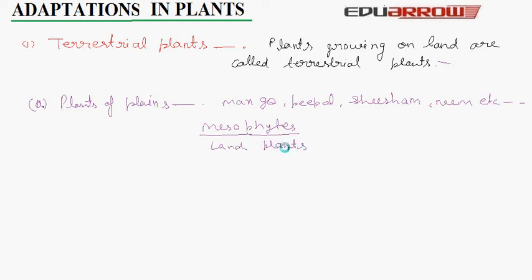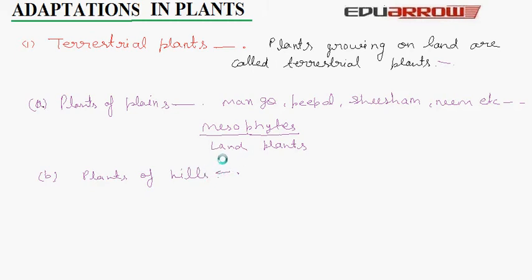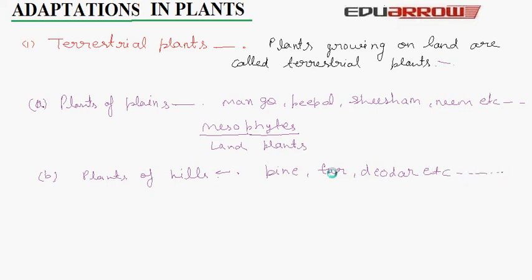The second type of terrestrial plants is plants of hills. Plants which grow on hills are called plants of hills. In cold, hilly areas like Ooty and Kashmir, trees are generally tall and straight. This feature helps them catch sunlight. These are evergreen plants — examples include pine, fir, and deodar. These types of plants are called conifer trees.